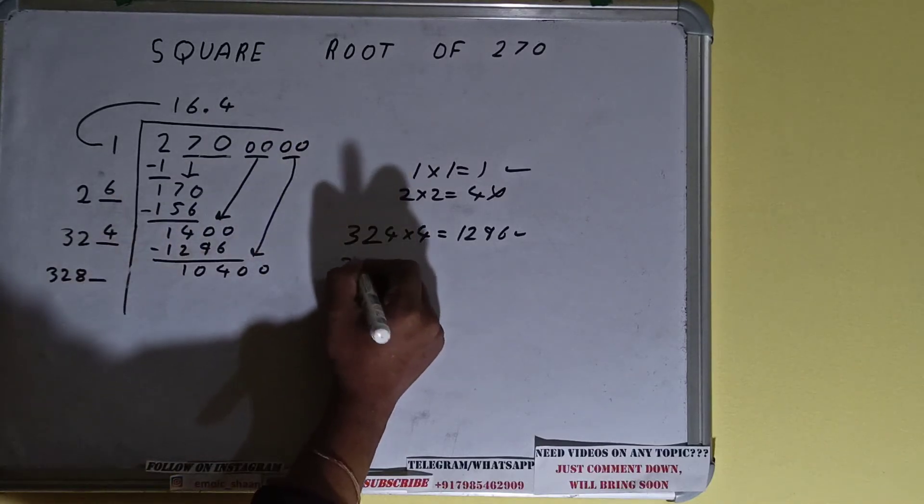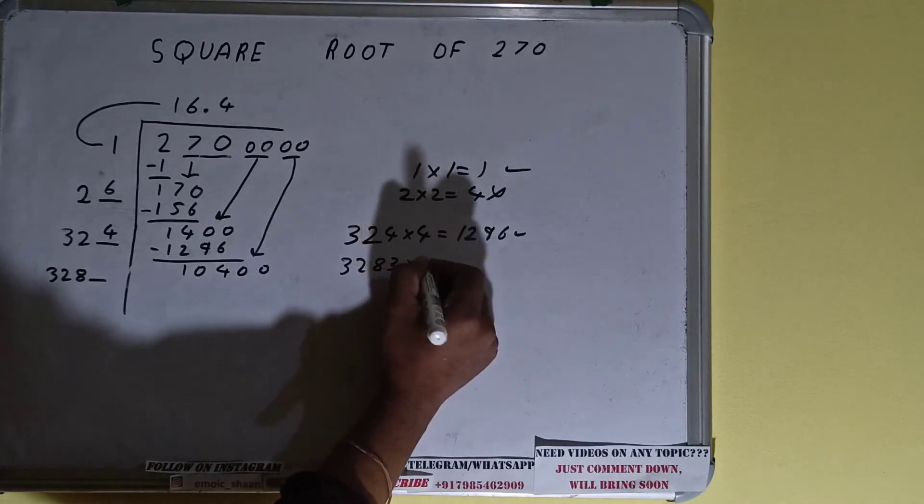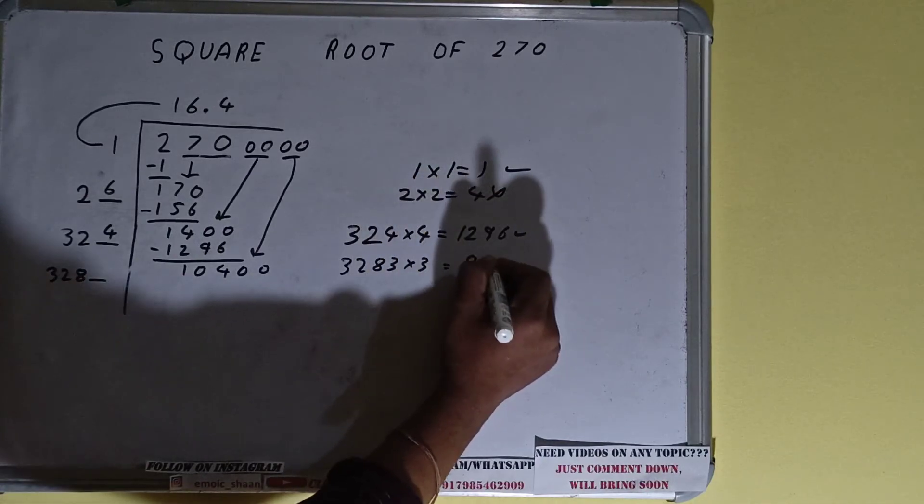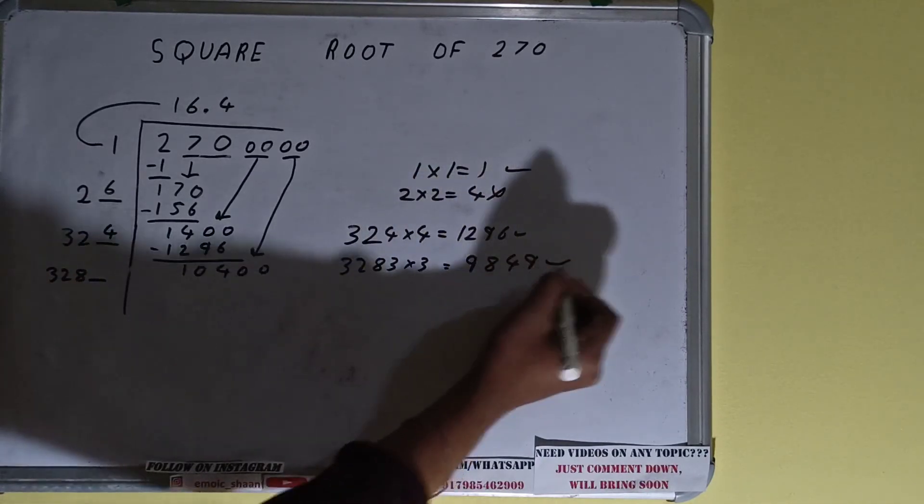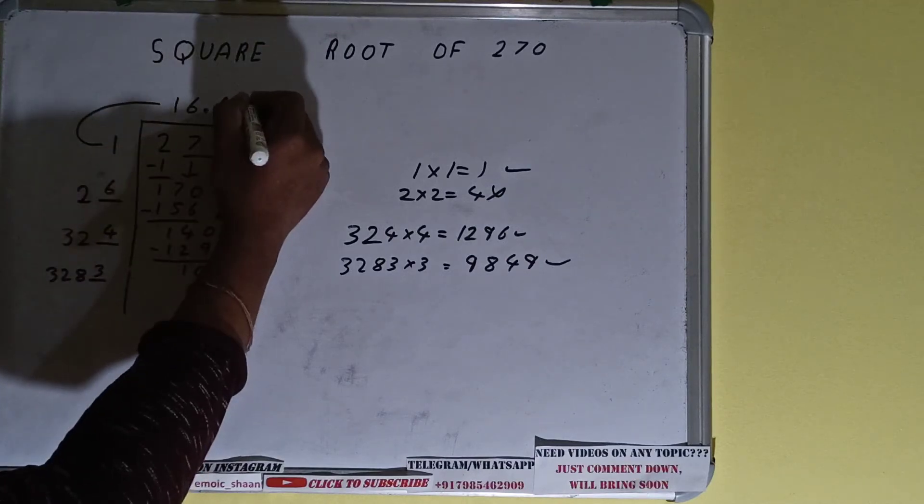Now we can try three times. 3283 into three we can try, it will be 9849, which is good to take. So three here and three here, 9849.